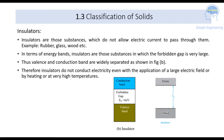Insulators are substances that do not allow electric current to pass through them. Examples include rubber, glass, and wood — these materials act as insulators because they won't allow electric current to pass through them.